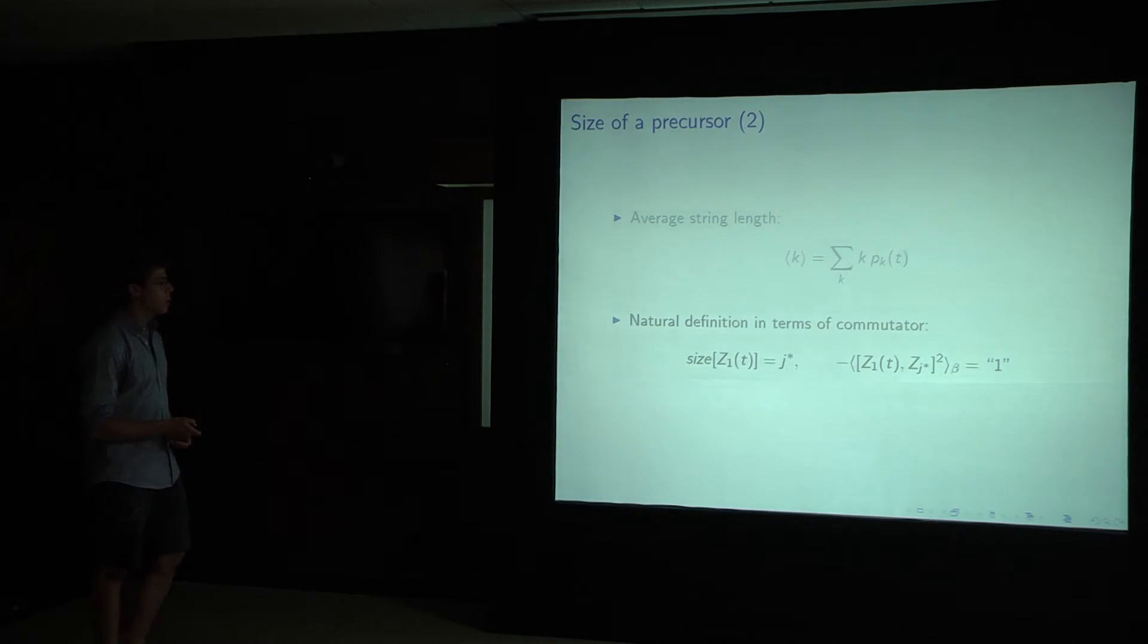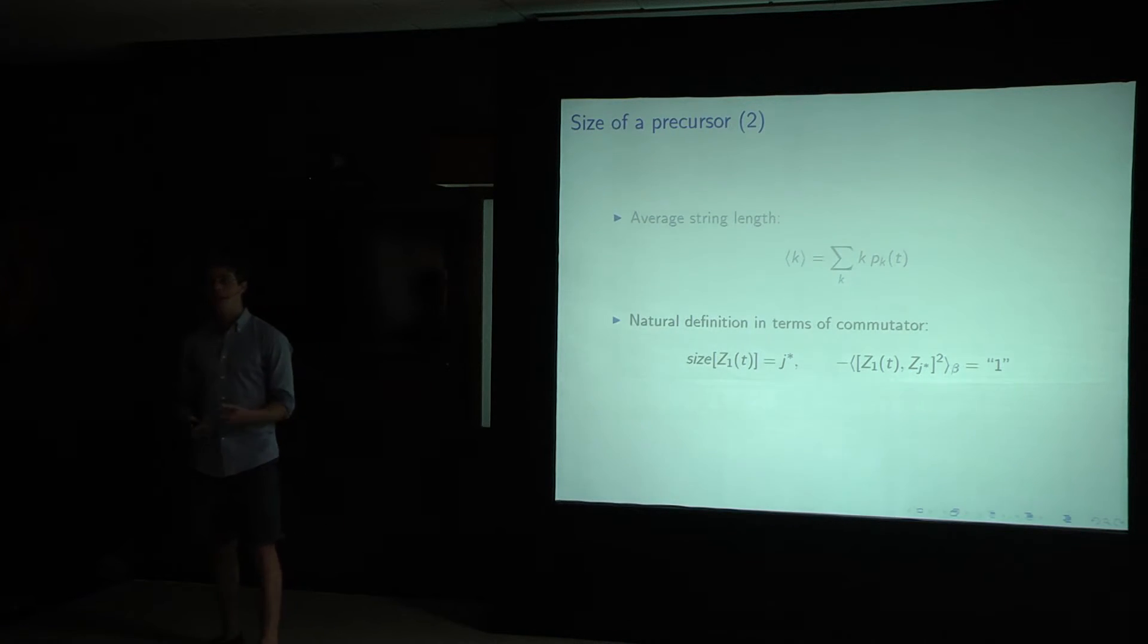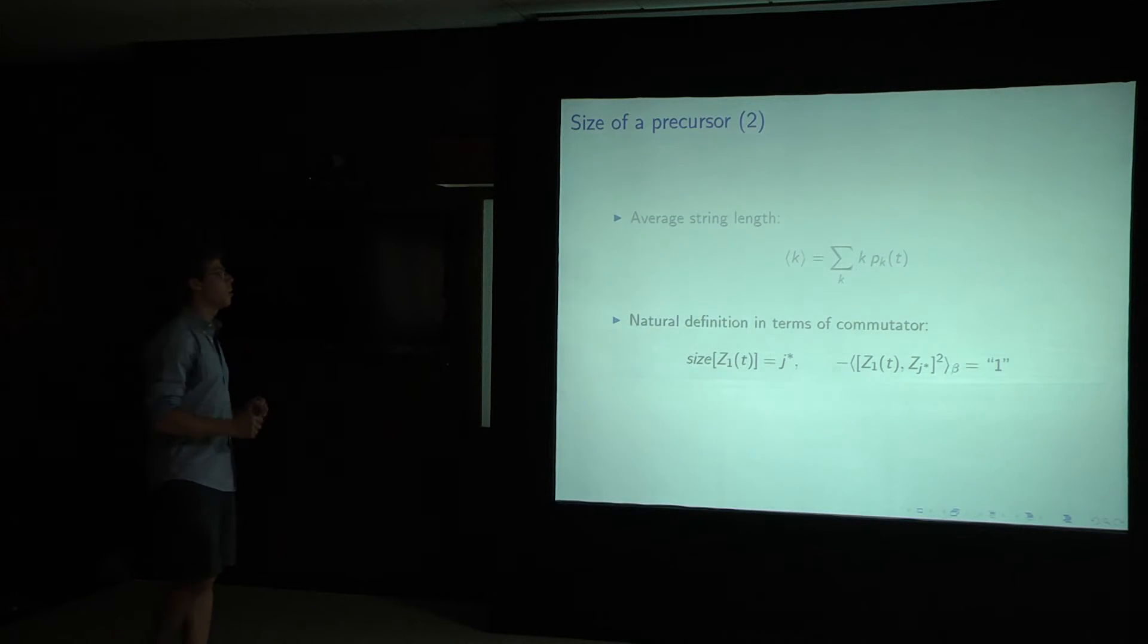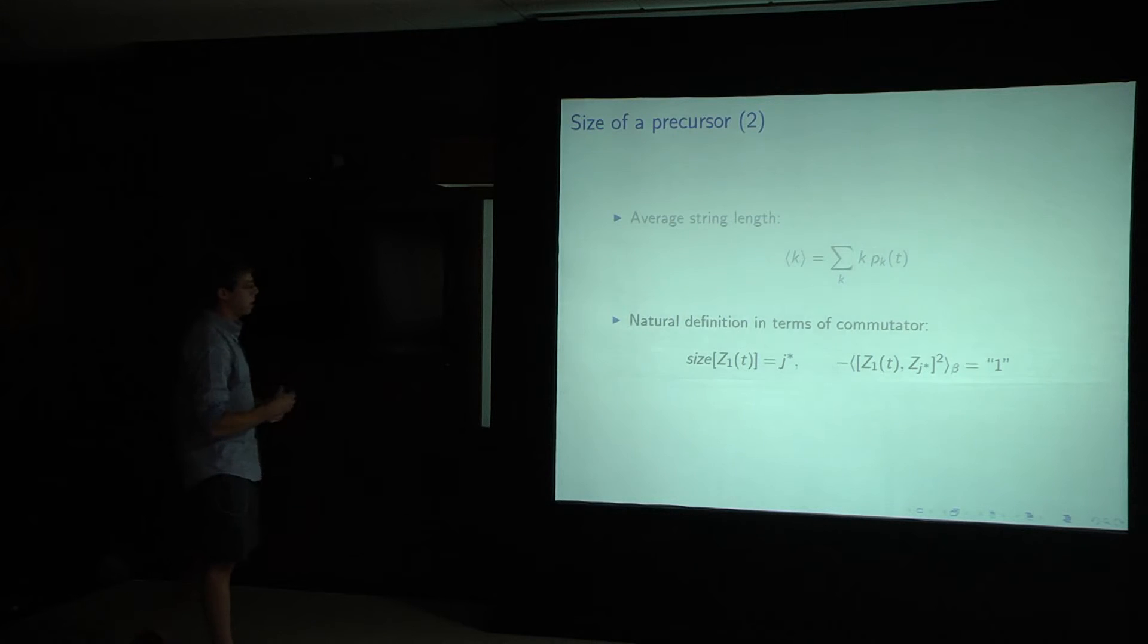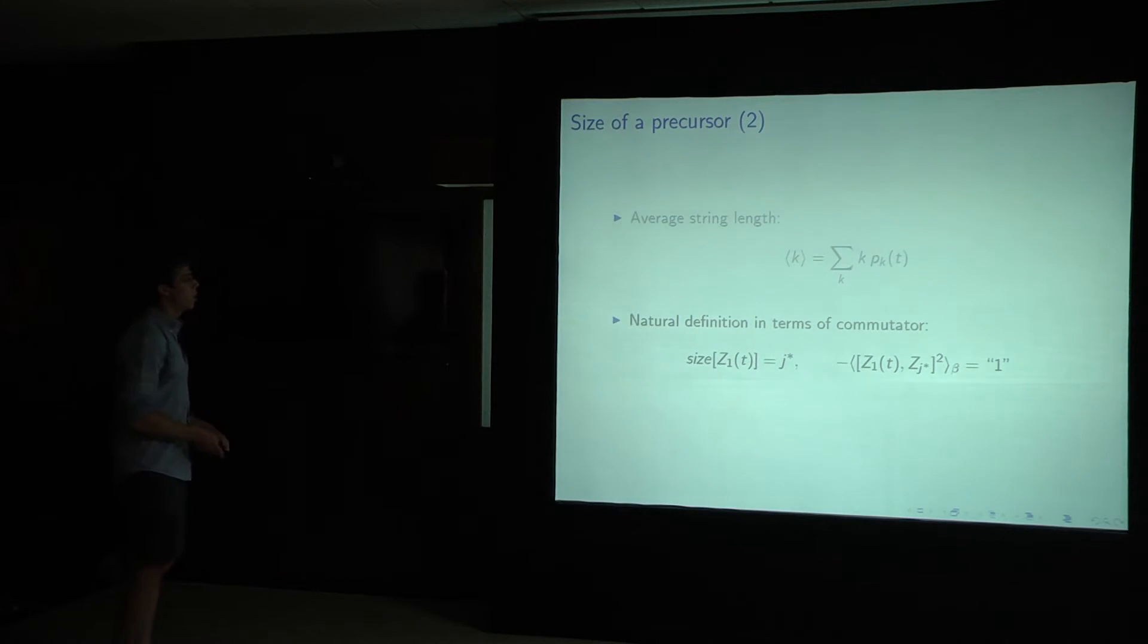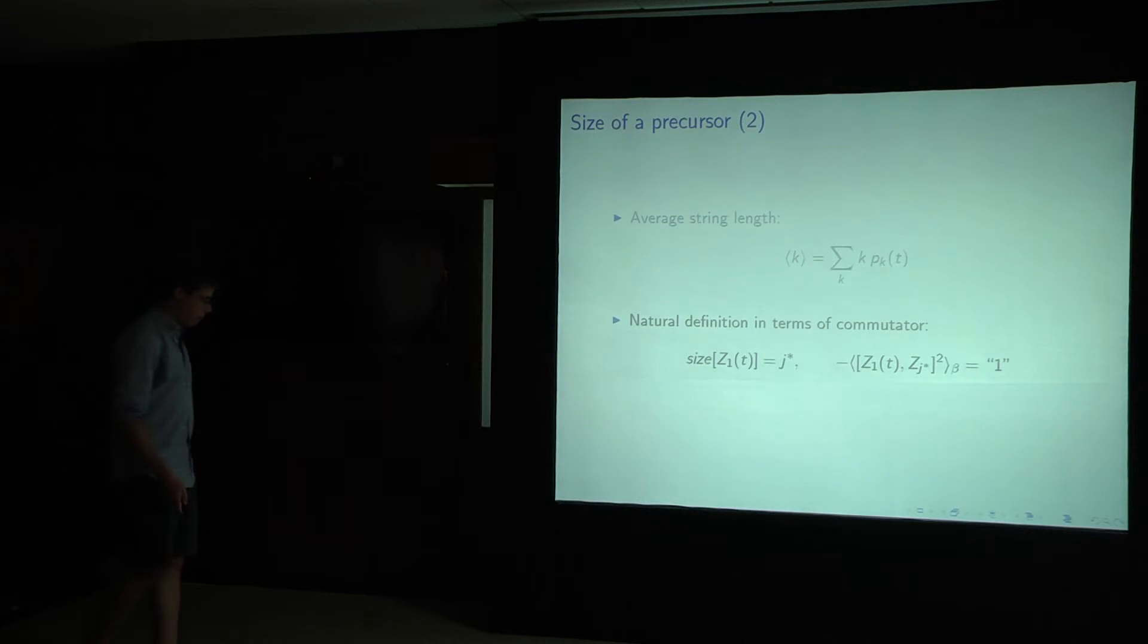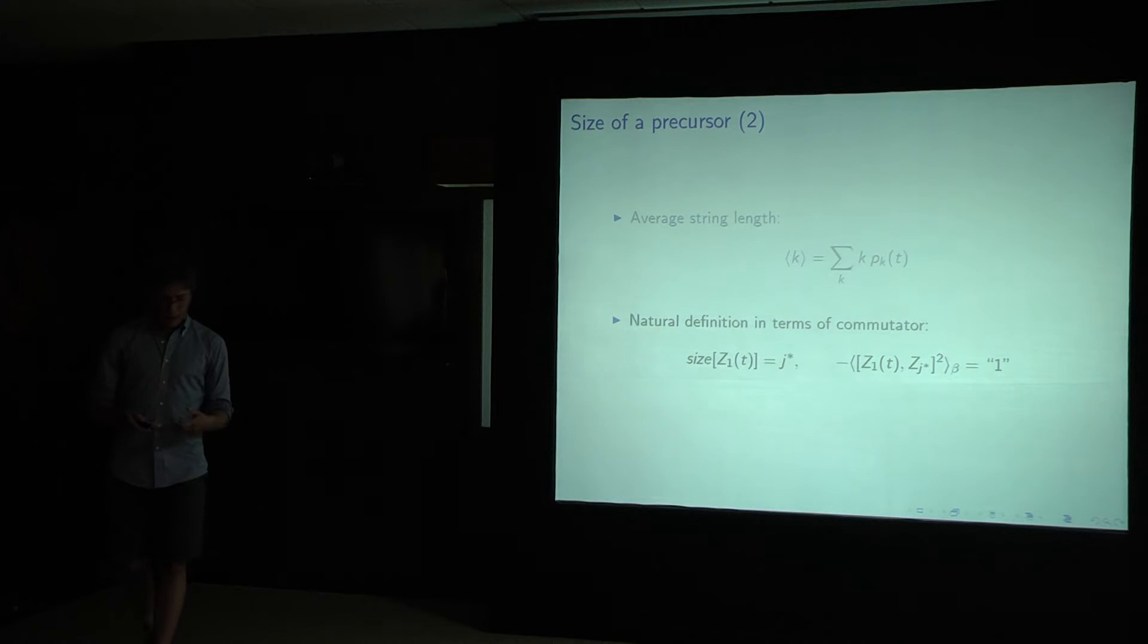The reason I have 1 in quotes here is because when we extend to other systems, this is only equal to 1. The midpoint is only equal to 1 for these spin chain variables. And for other systems, we'll need to normalize it for this to be the case. Good. So now that we have two notions of size, we can ask the question of, how fast do these things actually grow under chaotic time evolution?